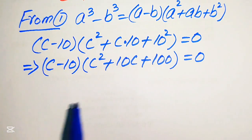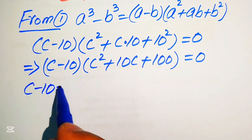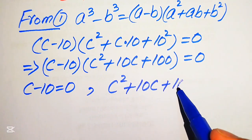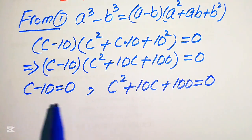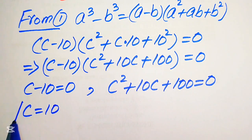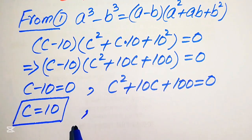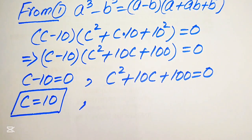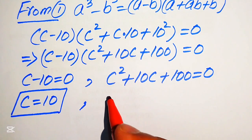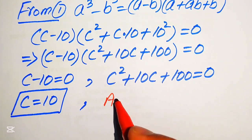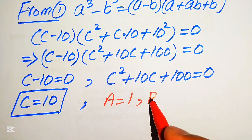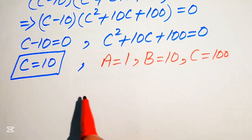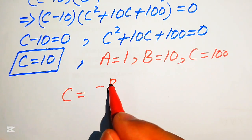We convert this into two sub-cases. The first sub-case is C minus 10 equals 0, and the second sub-case is C squared plus 10C plus 100 equals 0. From the first sub-case we easily get C equals 10. For the other values of C we need to solve the quadratic equation, so we identify the coefficients: a equals 1, b equals 10, and c equals 100.